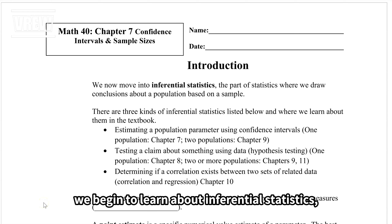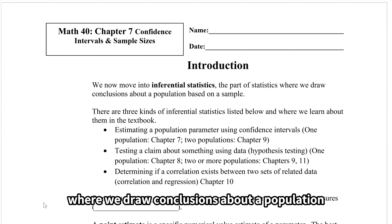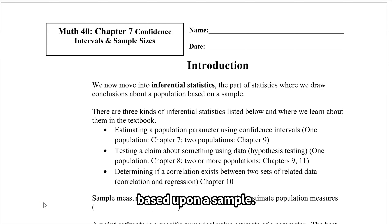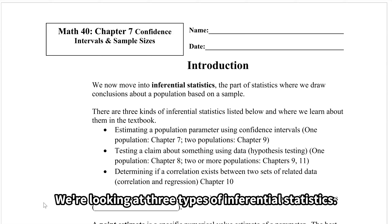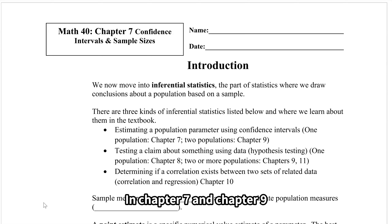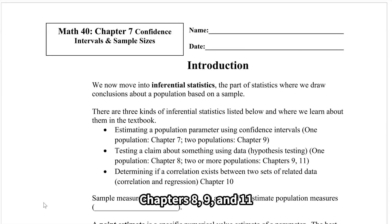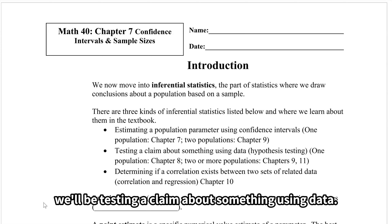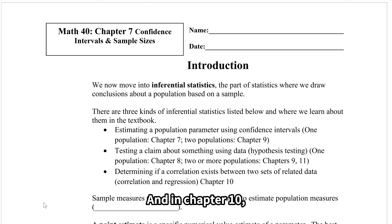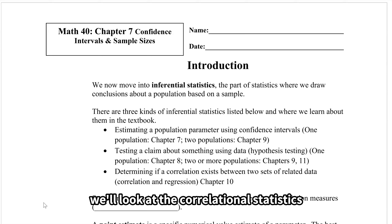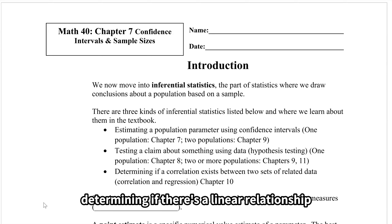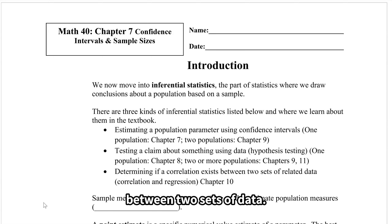In chapter 7, we begin to learn about inferential statistics, the branch of statistics where we draw conclusions about a population based upon a sample. We're looking at three types of inferential statistics. In chapters 7 and 9, we'll be looking at estimating a population parameter using confidence intervals. Chapters 8, 9, and 11, we'll be testing a claim about something using data. And in chapter 10, we'll look at correlational statistics, determining if there's a linear relationship between two sets of data.